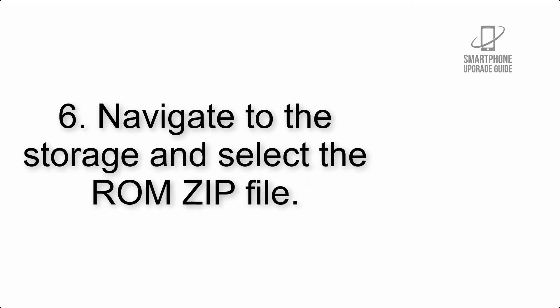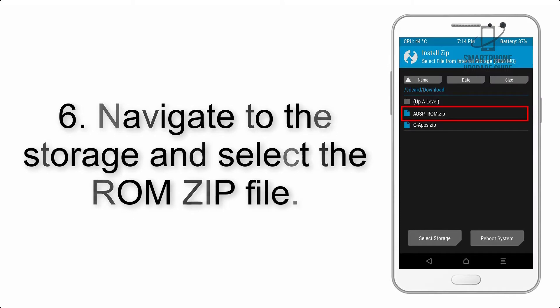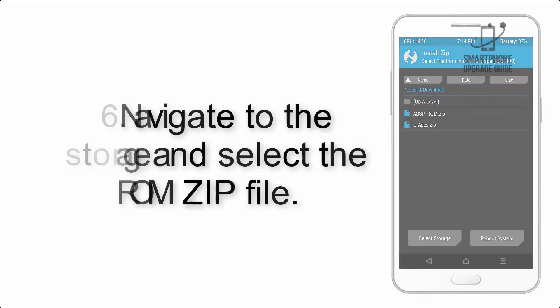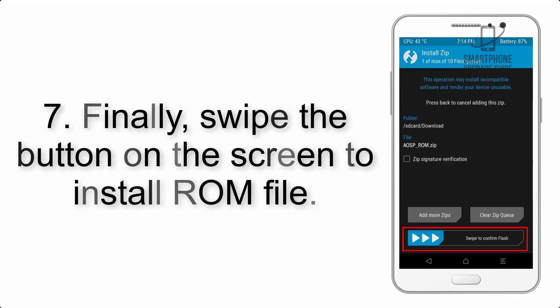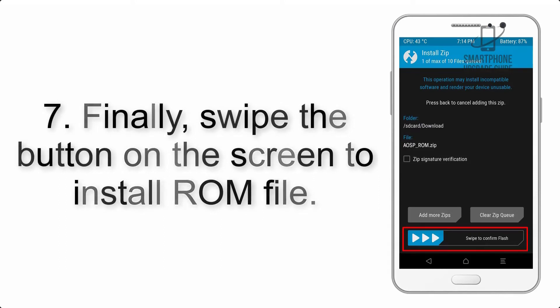Step 5: Go back to the recovery main screen and tap on the Install button. Step 6: Navigate to the storage and select the ROM zip file. Step 7: Swipe the button on the screen to install the ROM file.